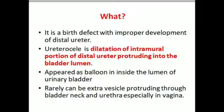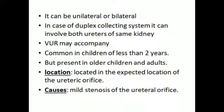Rarely, urethrocele can be extra-vesicle, protruding through the bladder neck and urethra, especially into the vagina. It can be unilateral or bilateral. In cases of a duplex collecting system, it can involve both ureters of the same kidney, where vesicoureteric reflux may accompany.